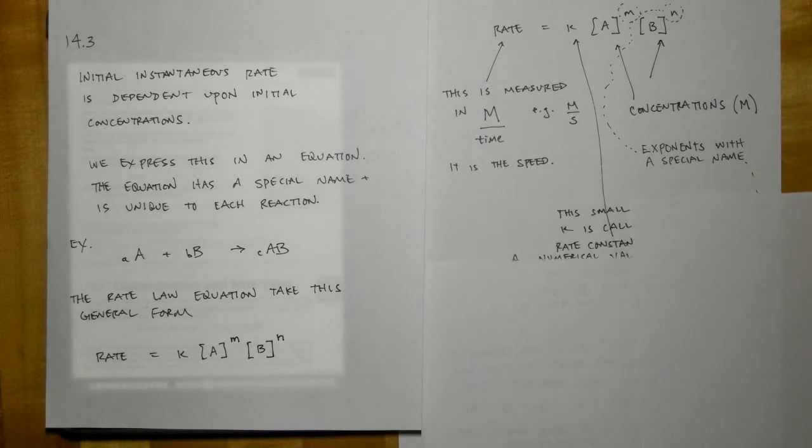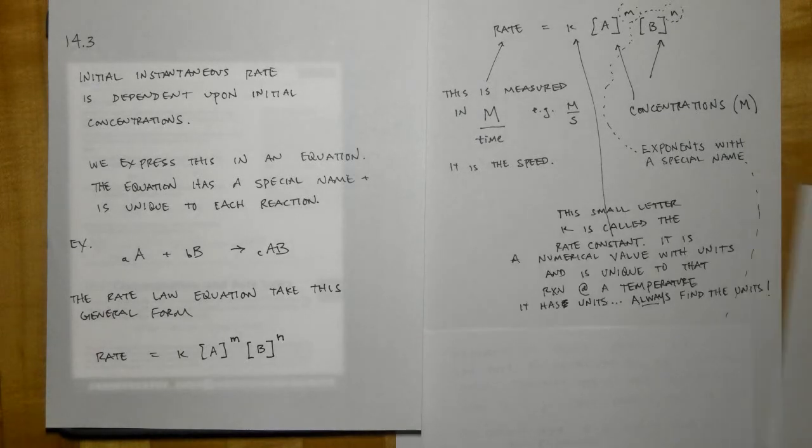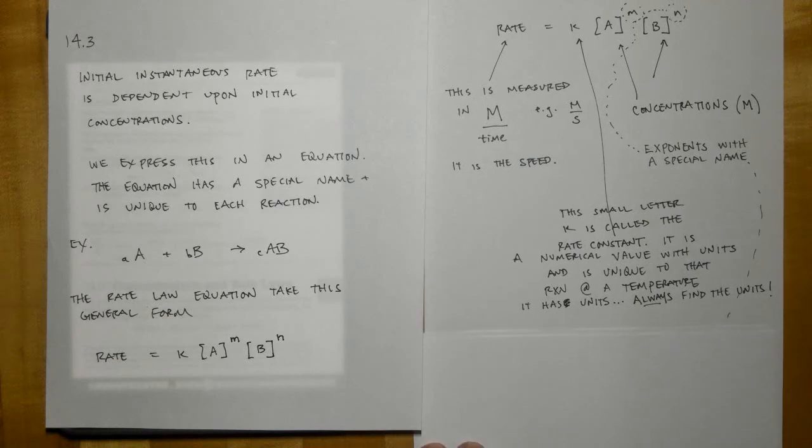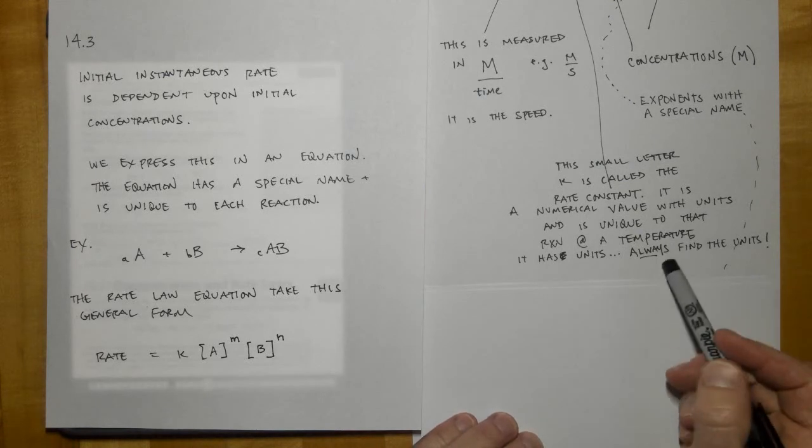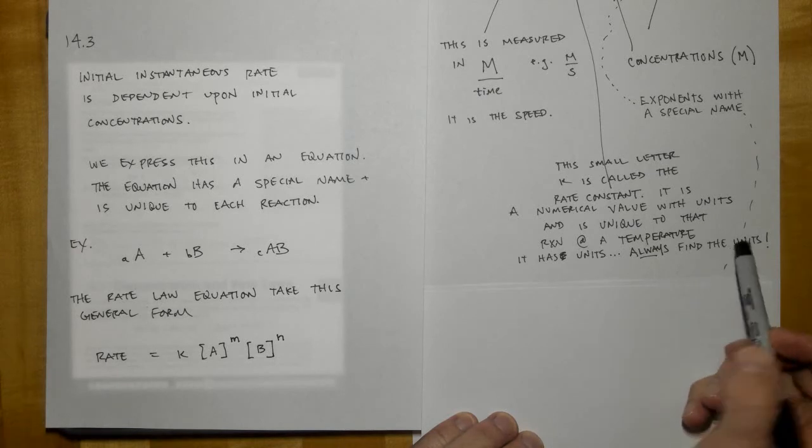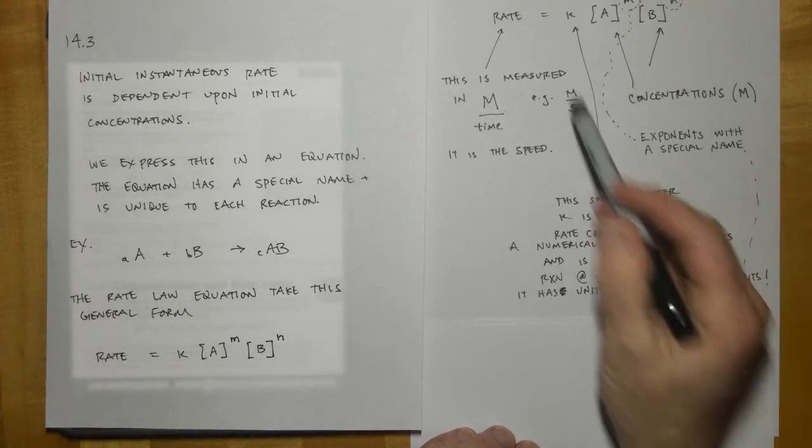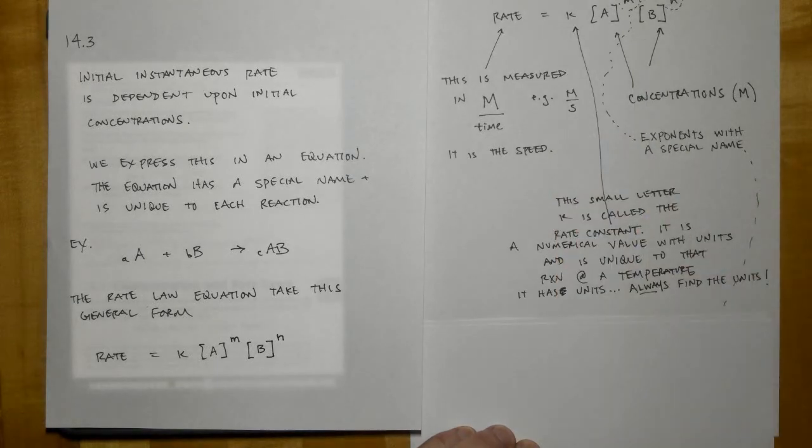The little k, the small letter k, is called the rate constant, and it has a numerical value with units, and it's unique to that reaction at a particular temperature. It has units, and you should always find out what those units are. Remember, it's unique to this particular reaction. K is always going to be different depending on what the reaction is, and it's going to have units, and the units will be unique to that reaction too, depending on what the exponents are right here.